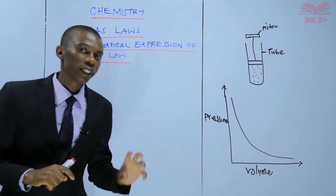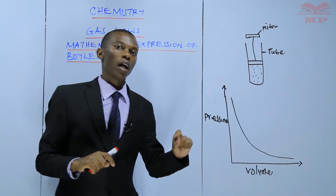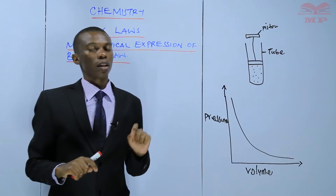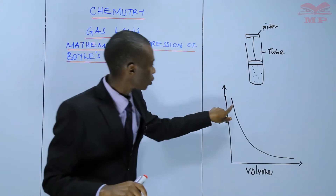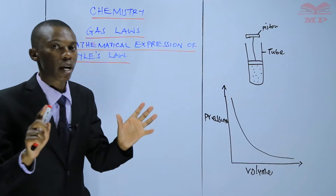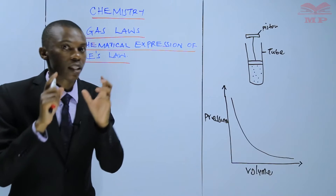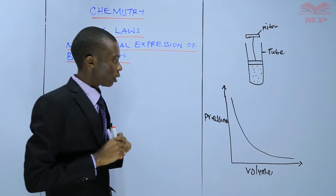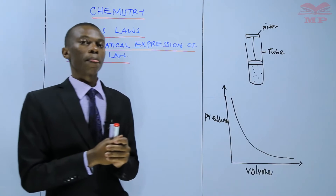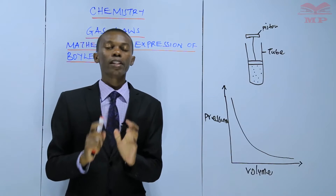The reason the curve does not touch the axes is that the volume cannot be zero and the pressure cannot be zero. If you have a volume, then there is pressure involved in that volume. So basically, that is what we discussed in the previous lesson.